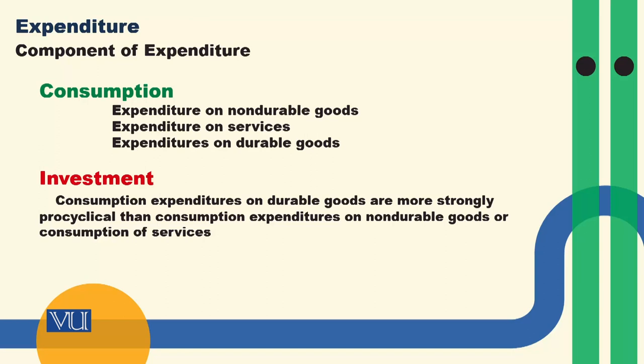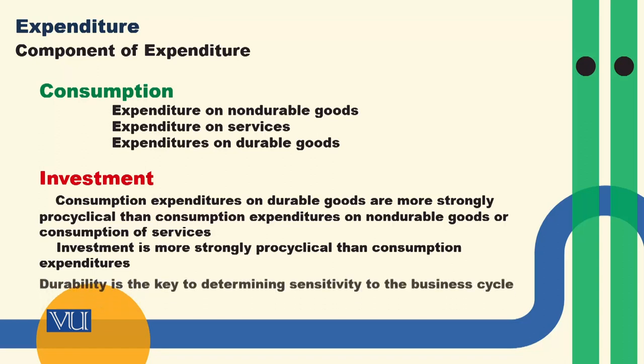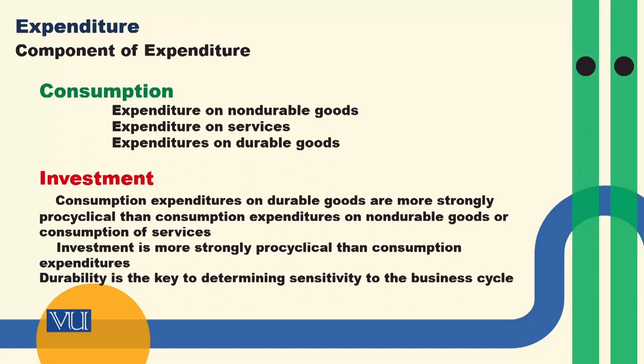Within consumption, there are different types of expenditure. Comparing them, durable items of consumption expenditure are more strongly pro-cyclical compared to non-durable goods and services. Furthermore, investment is more strongly pro-cyclical compared to consumption overall. And within consumption, durable consumption is more pro-cyclical than non-durable goods.